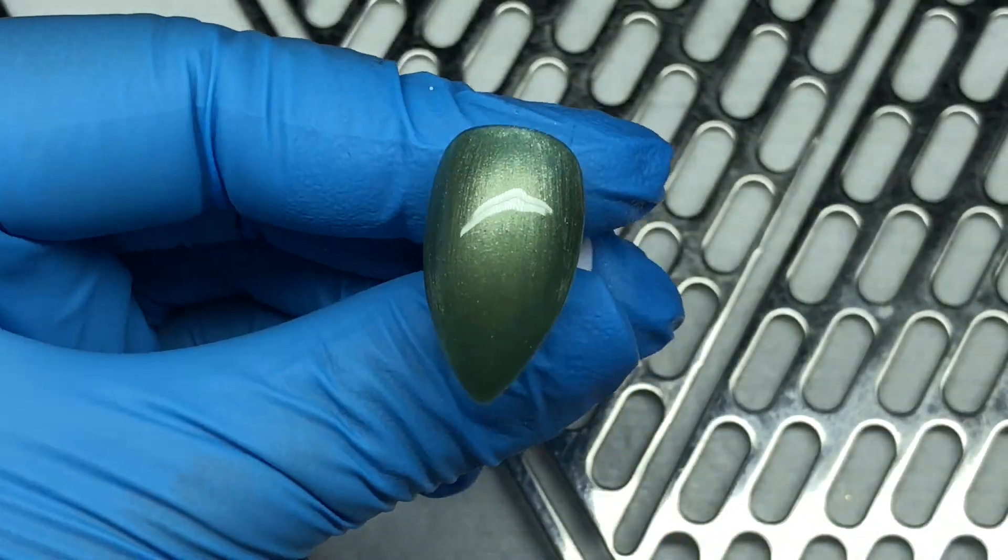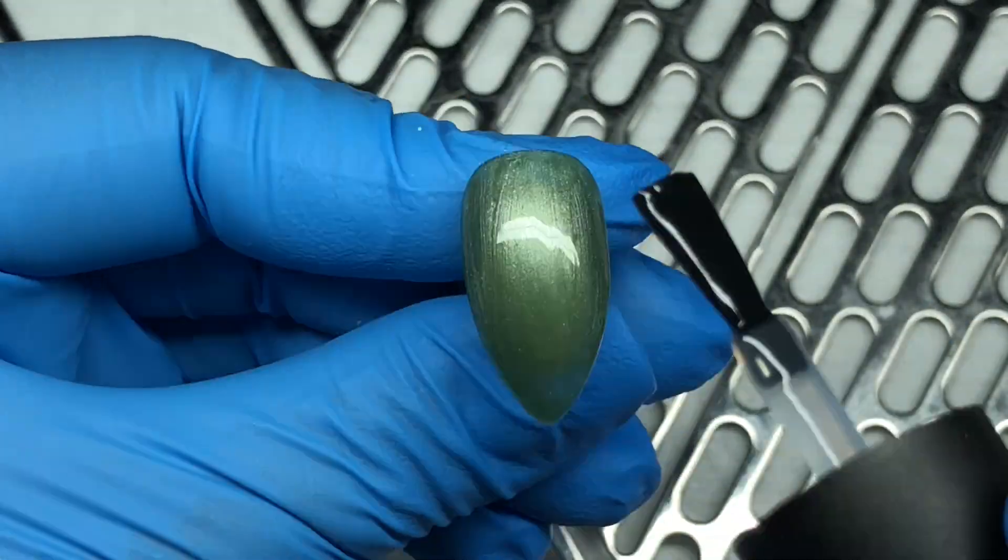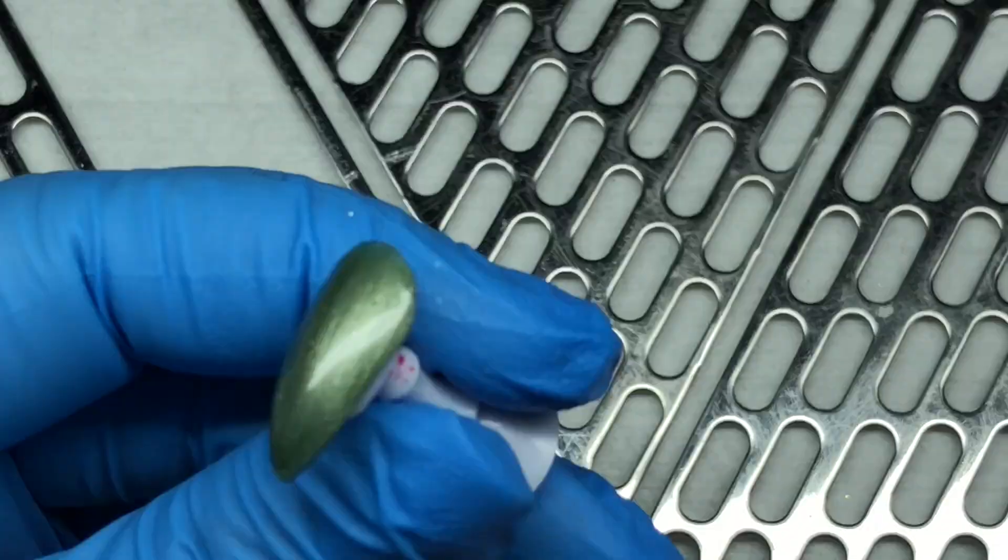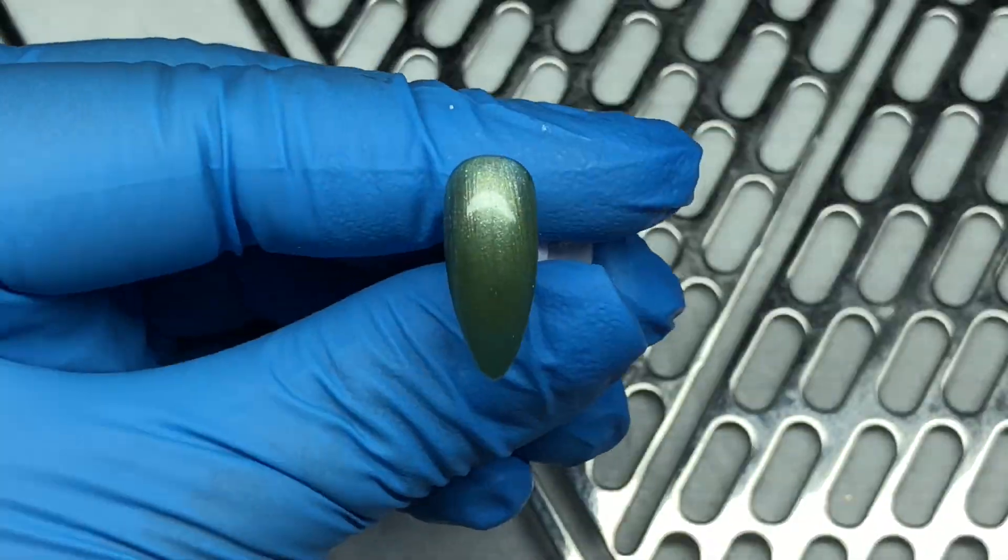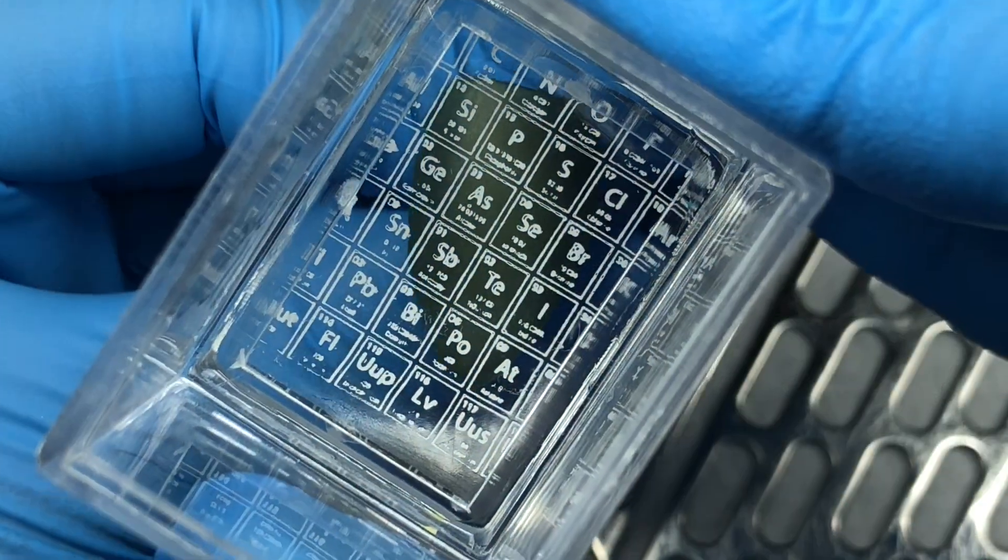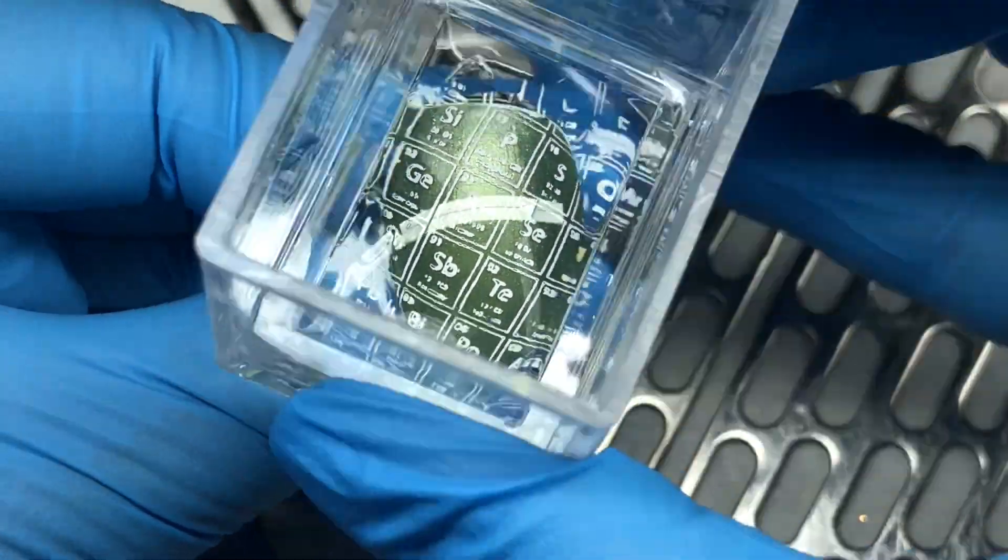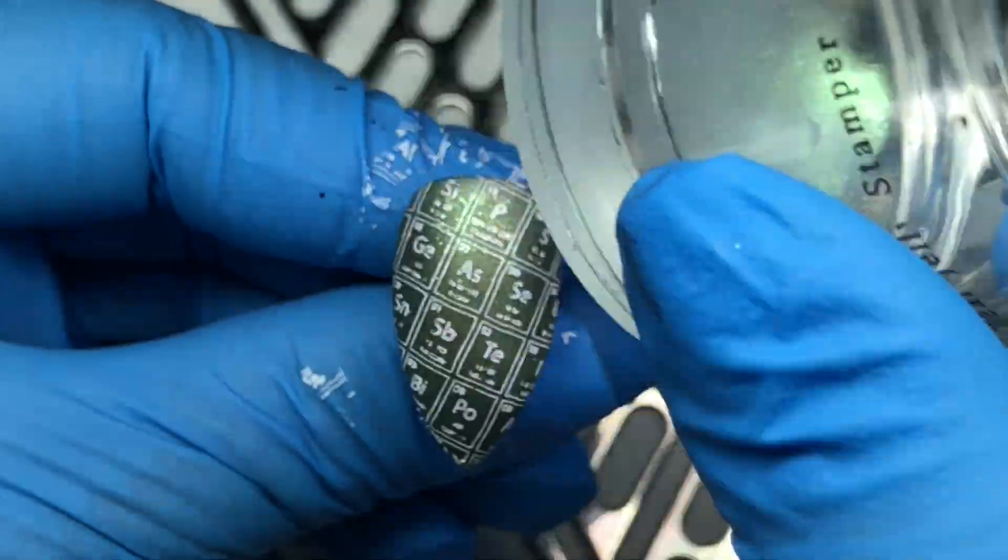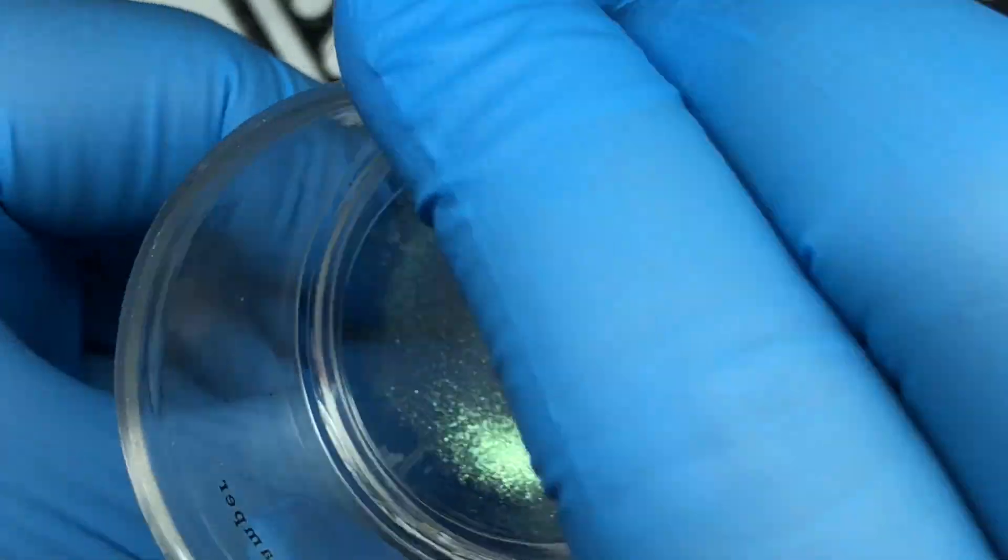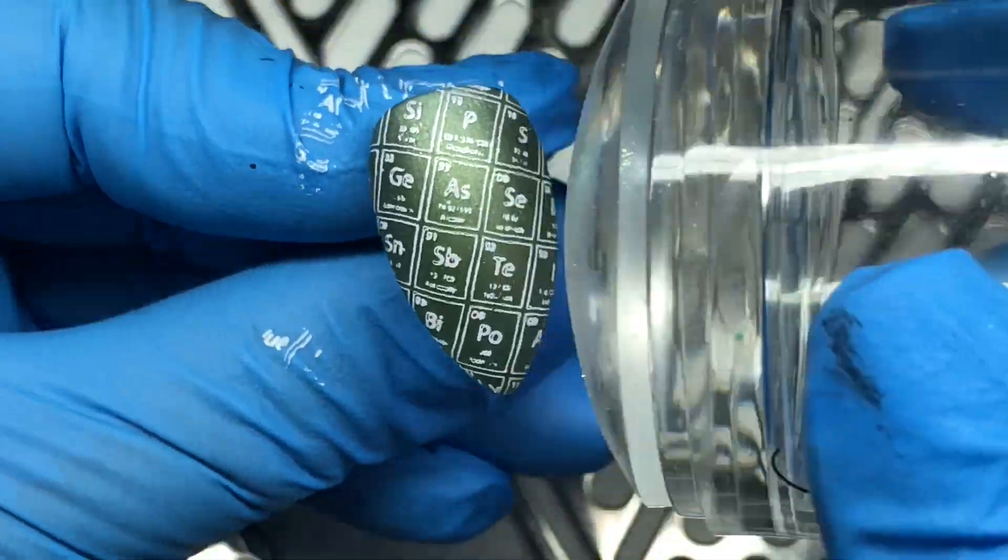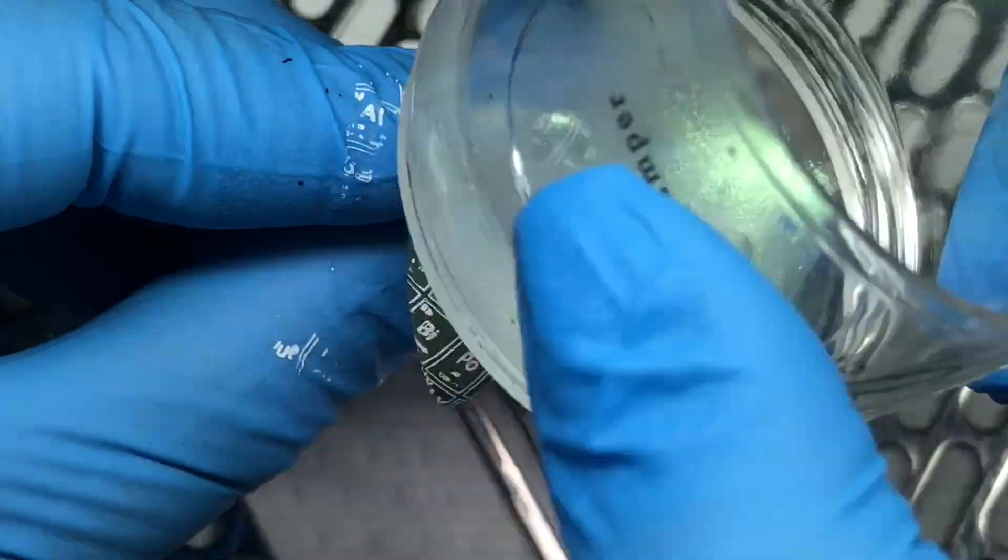Now I'm going to seal the color in with the Ugly Duckling matte top coat. We're going to apply the first image, which is the periodic table, to this nail. Then right away I'm going to grab my Clear Jelly Stamper that I have applied the additive to and just tap it in place to get it to stick to the white polish.